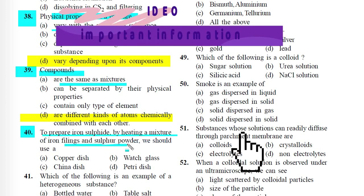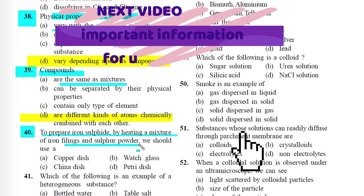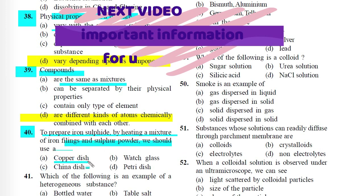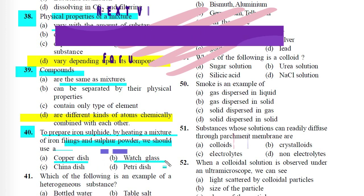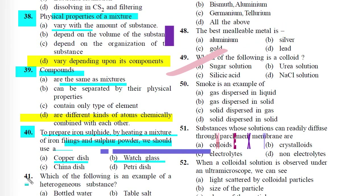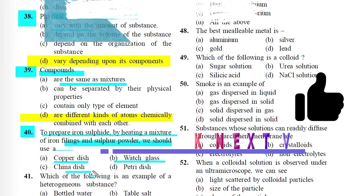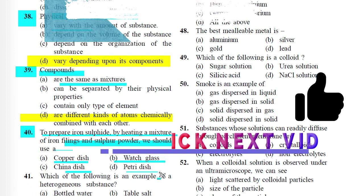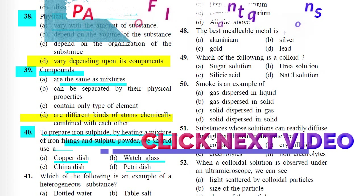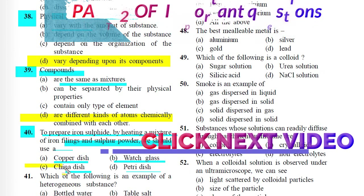Question 40: To prepare iron sulphide by heating a mixture of iron filings and sulphur powder, we should use a: A) Copper dish, B) Watch glass, C) China dish, D) Petri dish. Correct answer is C) China dish.